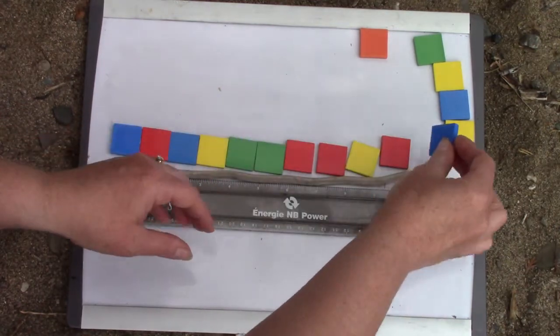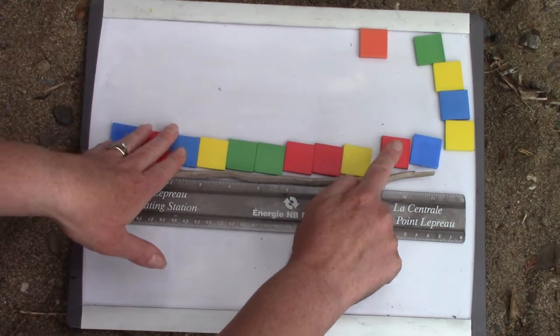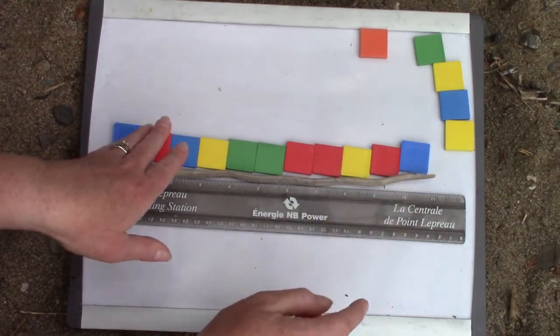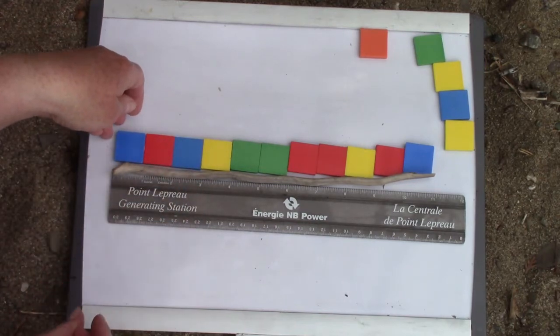Let's measure it again. One, two, three, four, five, six, seven, eight, nine, ten, eleven. It was 11 inches and 11 tiles long.